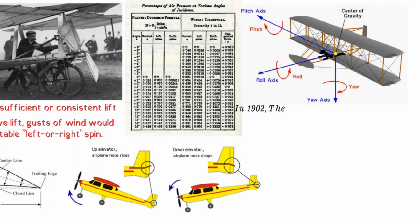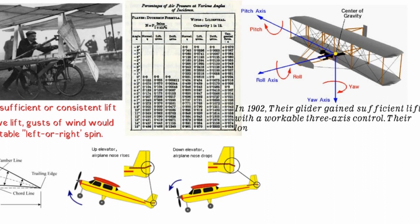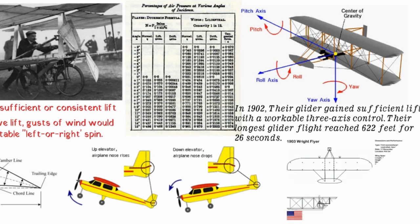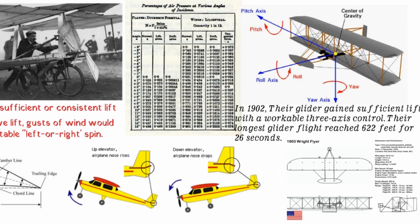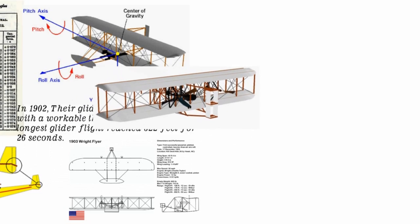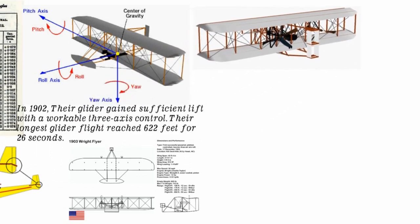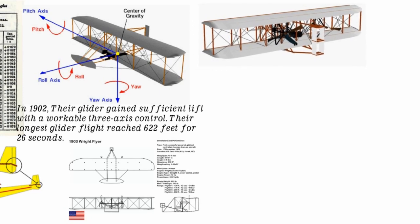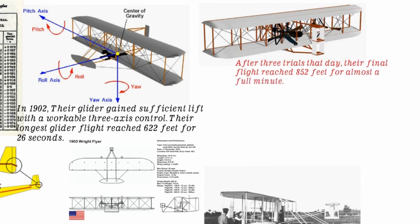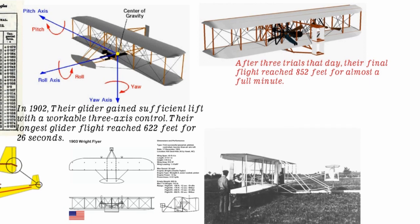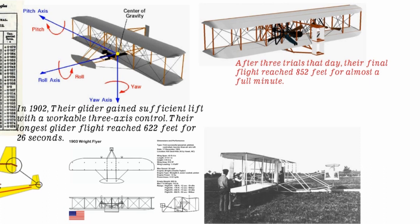Finally, in 1902, the Wright brothers achieved true control. Their glider gained sufficient lift with a workable three-axis control system, and their longest glider flight reached 622 feet for 26 seconds. They acquired a patent for their Wright glider in March 1903. Seven months later, they made history, developing a motorized version of their glider — the Wright Flyer 1 — which reached 120 feet for 12 seconds on its first flight. After three trials that day, their final flight reached 852 feet for almost a full minute. In 1908, they developed the Wright Model A, which became the first to carry a passenger in flight.